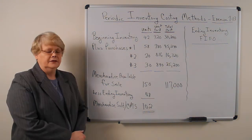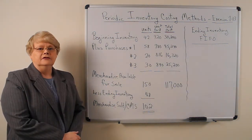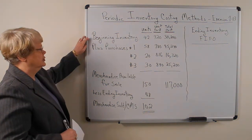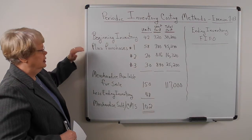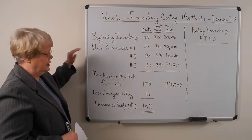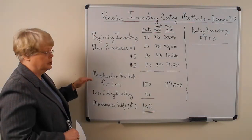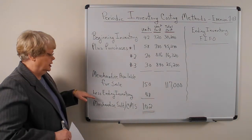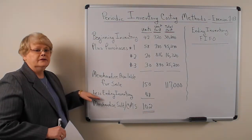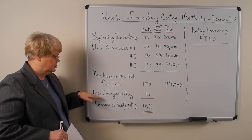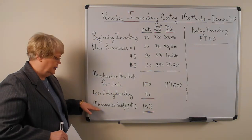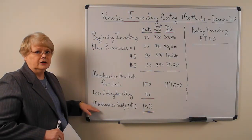The formula starts with beginning inventory plus purchases, and that gives you merchandise available for sale. Then you count your inventory, take a physical count, subtract your ending inventory, and then you can come up with your cost of merchandise sold.